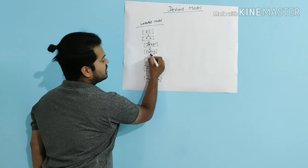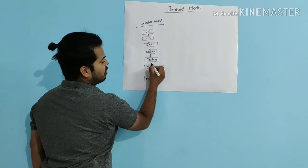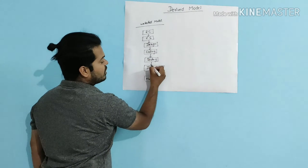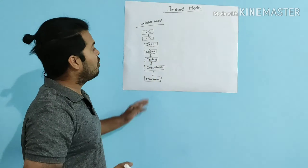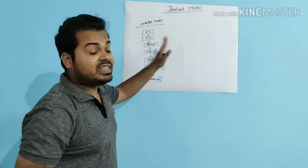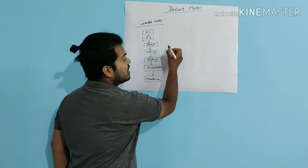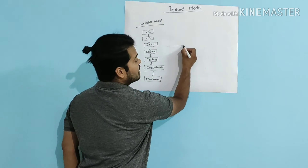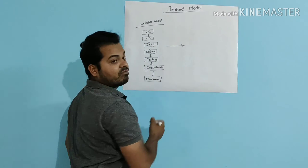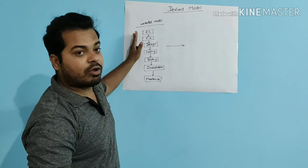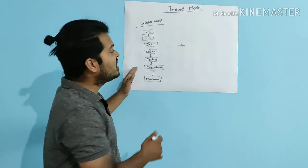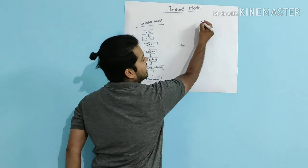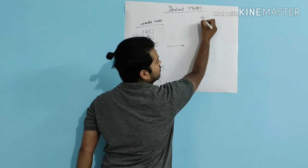In my derived model I am going to do some modifications to this. So here is my waterfall model on one side and this is my derived model.